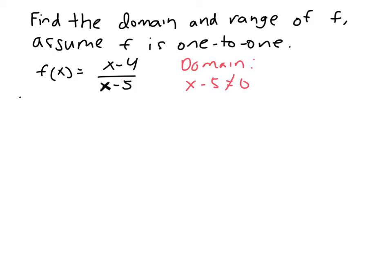So that means that x cannot equal 5, right? If I were to add 5 to both sides of the equation there, I get x cannot equal 5. So the domain is negative infinity to 5 in union with 5 to infinity.